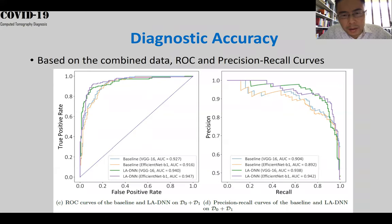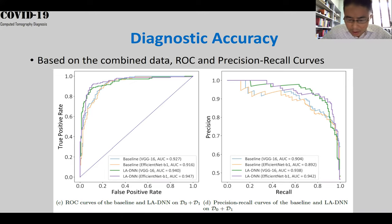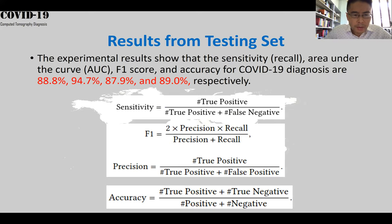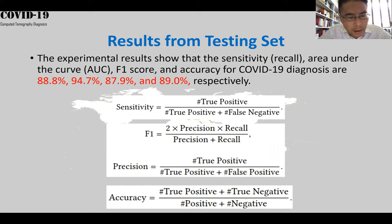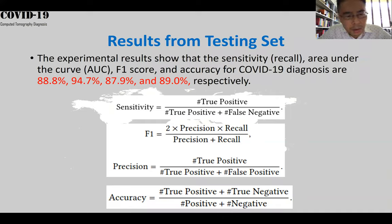Here's our diagnostic accuracy based on ROC and the precision-recall curve. We also evaluate our results based on F1 score, accuracy, and sensitivity. Here's the definition of all these evaluation metrics, and all these numbers are around 90%.